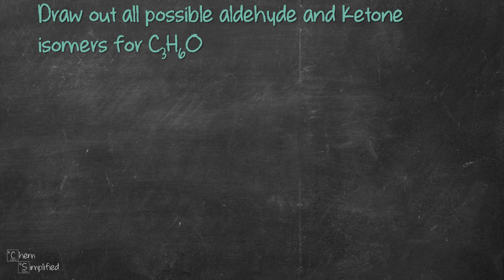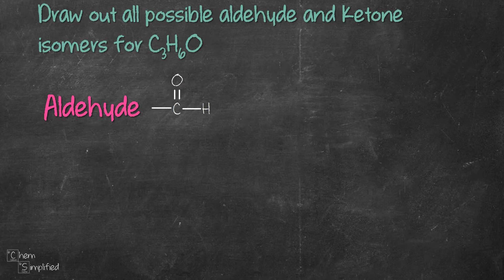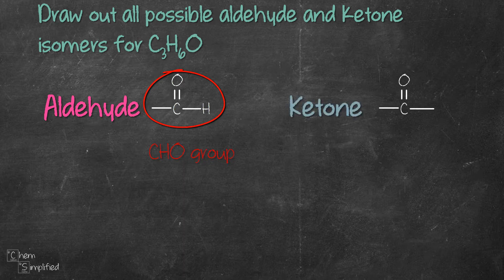A quick recap on the functional groups. Aldehyde has a carbonyl functional group which is C double bond O, and it is connected to a hydrogen. Note that this CHO group is always at the first carbon for aldehyde, whereas for ketone it has the same carbonyl group but it is sandwiched between two carbons — no hydrogens here.